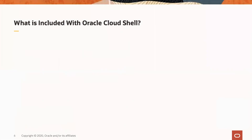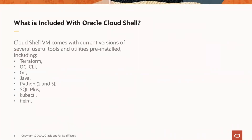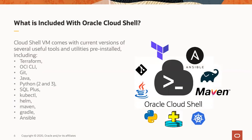Here is what is included with Oracle Cloud Shell: Terraform, OCI CLI, Git, Java, Python 2 and 3, SQL+, kubectl, Helm, Maven, Gradle, and Ansible. Which means we have a big zoo of different utilities that will help you every day.